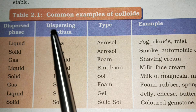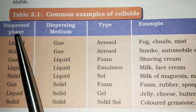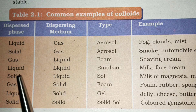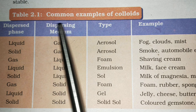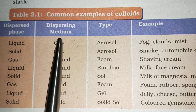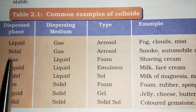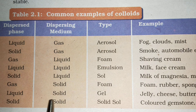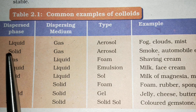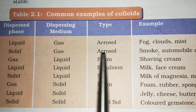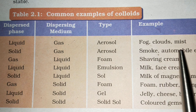In Table 2.1, common examples of colloids are listed. When the dispersed phase is liquid and the dispersing medium is gas, or when the dispersed phase is solid and the dispersing medium is gas, the colloid is called an aerosol. Examples include fog, cloud, and mist for liquid-in-gas, and smoke and automobile exhaust for solid-in-gas aerosols.